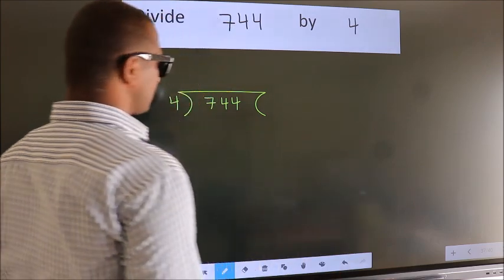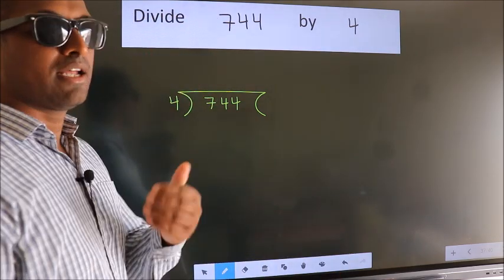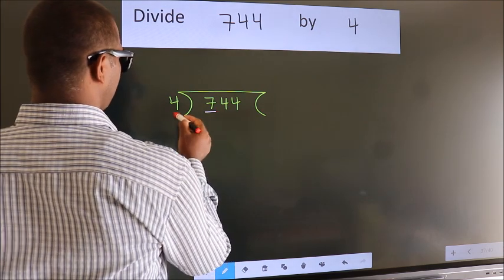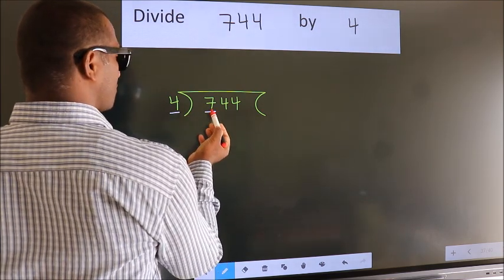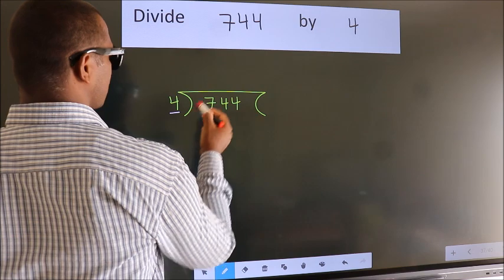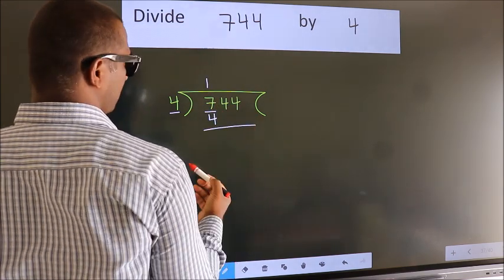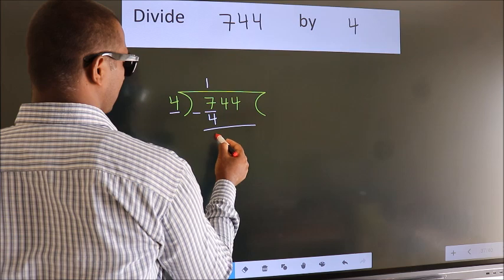This is your step 1. Next, here we have 7, here 4. A number close to 7 in 4 table is 4 once 4. Now we should subtract. We get 3.